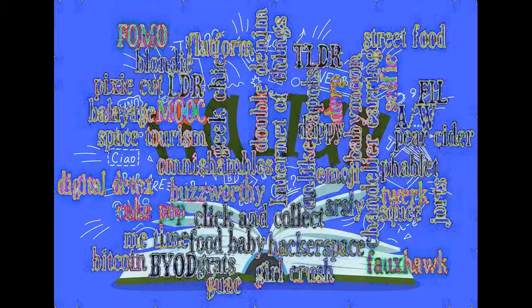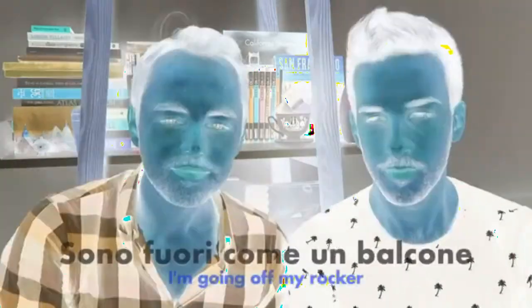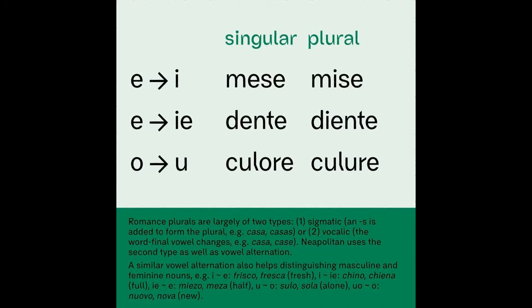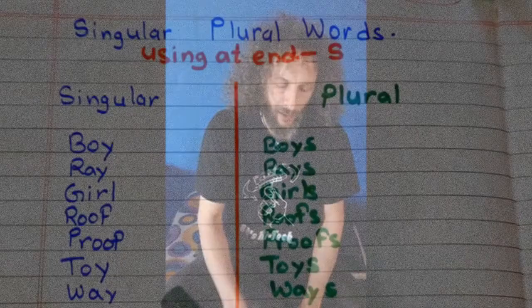The following dialects constitute Neapolitan; numbers refer to the map. The southernmost regions of Italy — most of Calabria, southern Apulia, and southern Salerno — as well as Sicily, are home to Sicilian rather than Neapolitan.